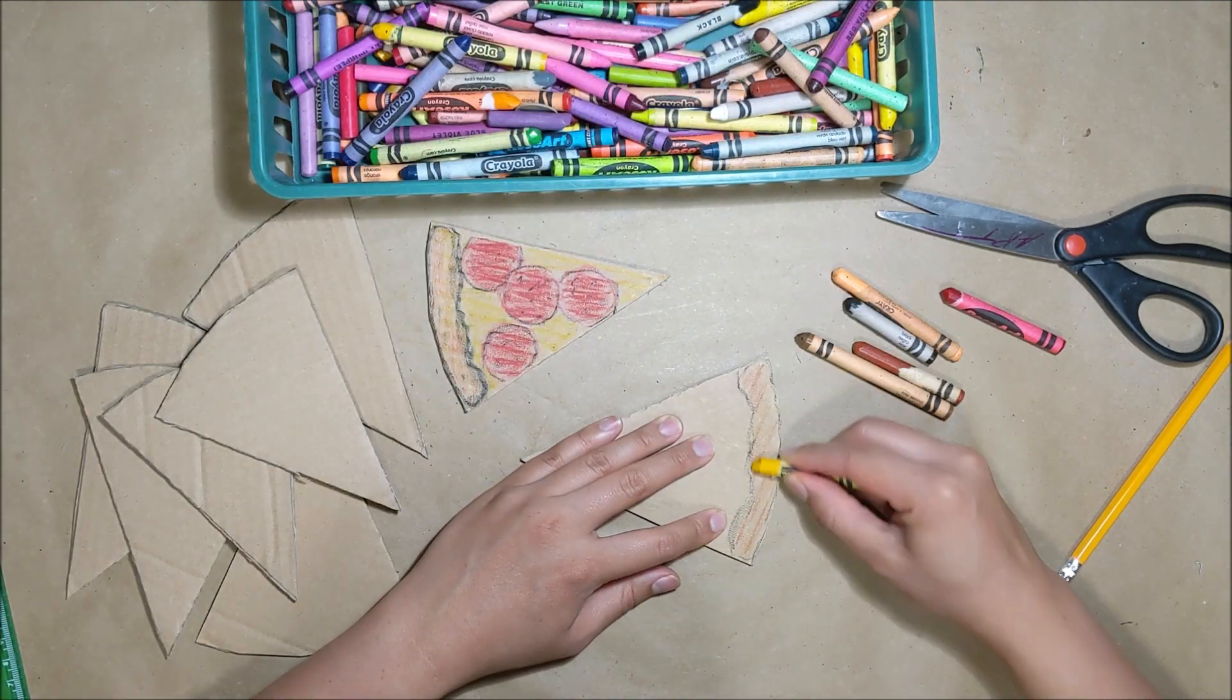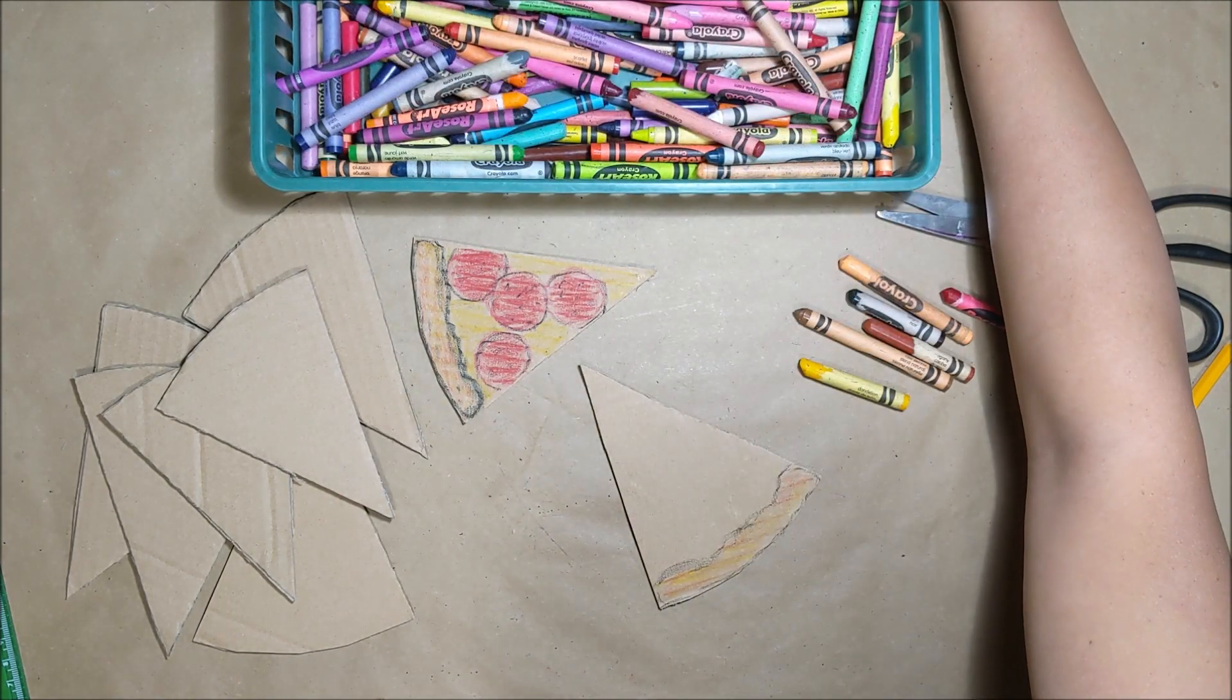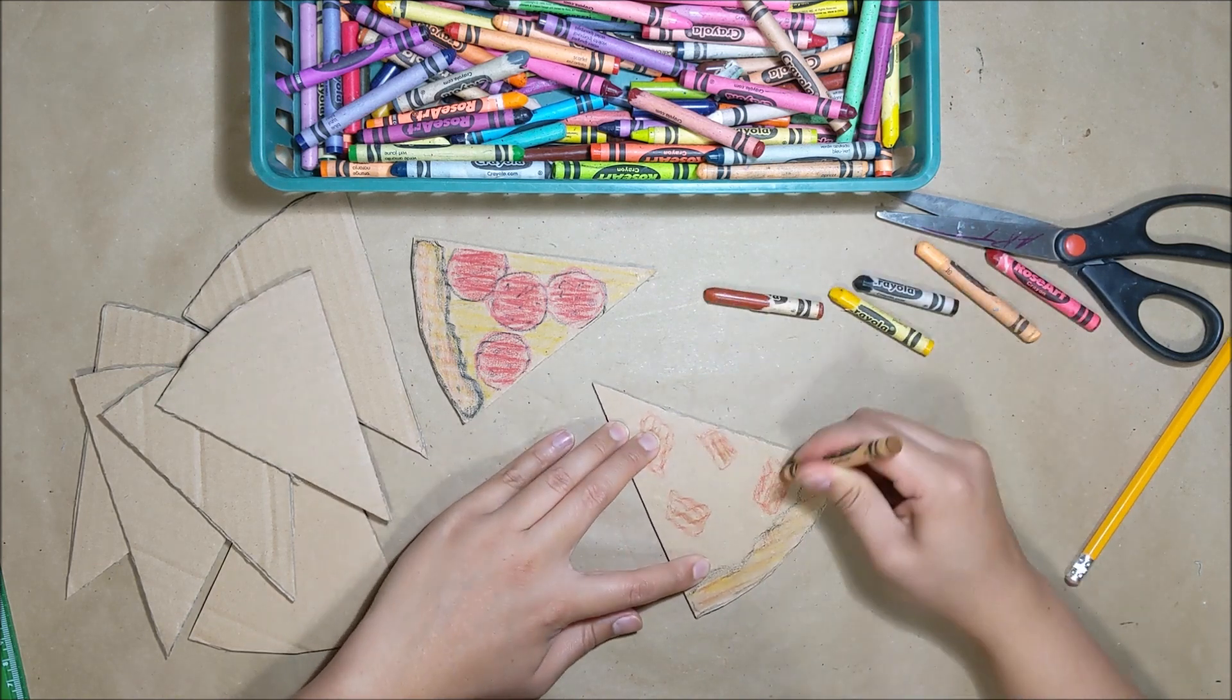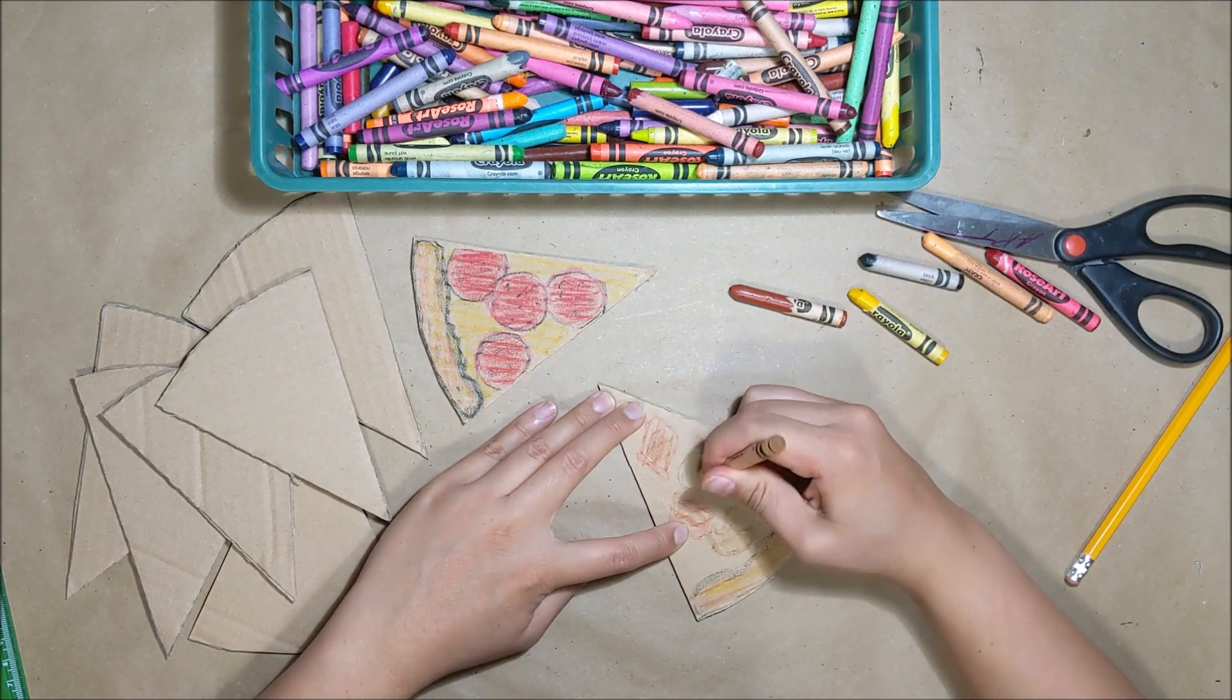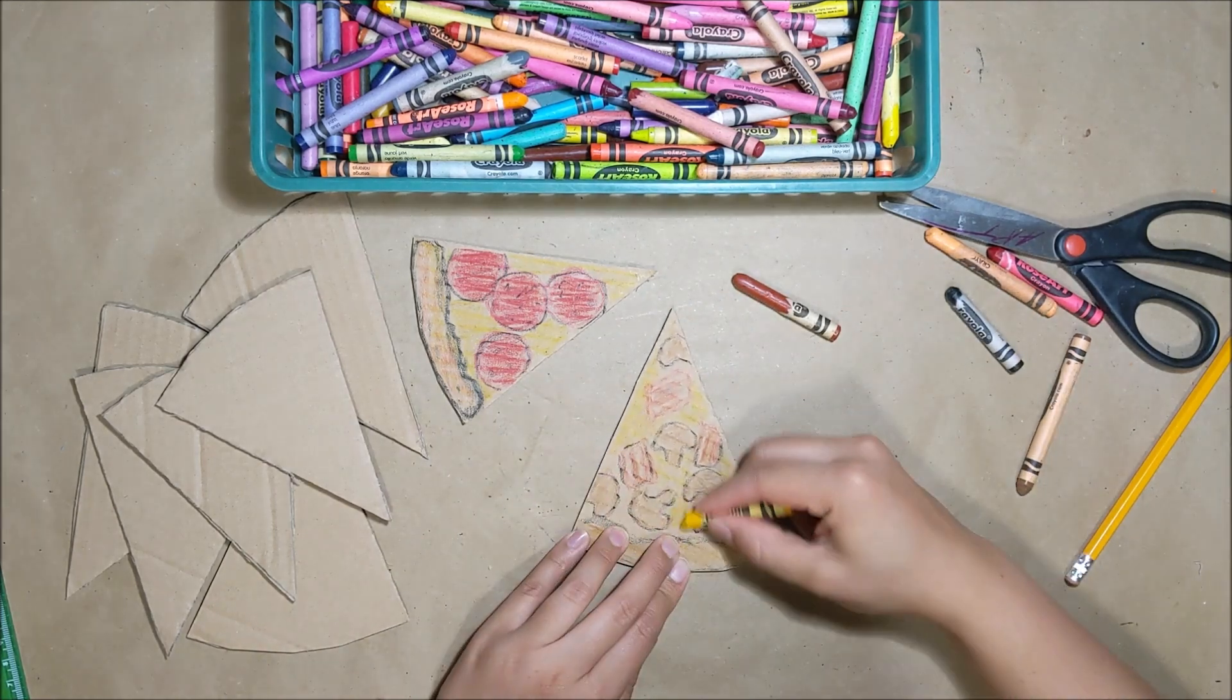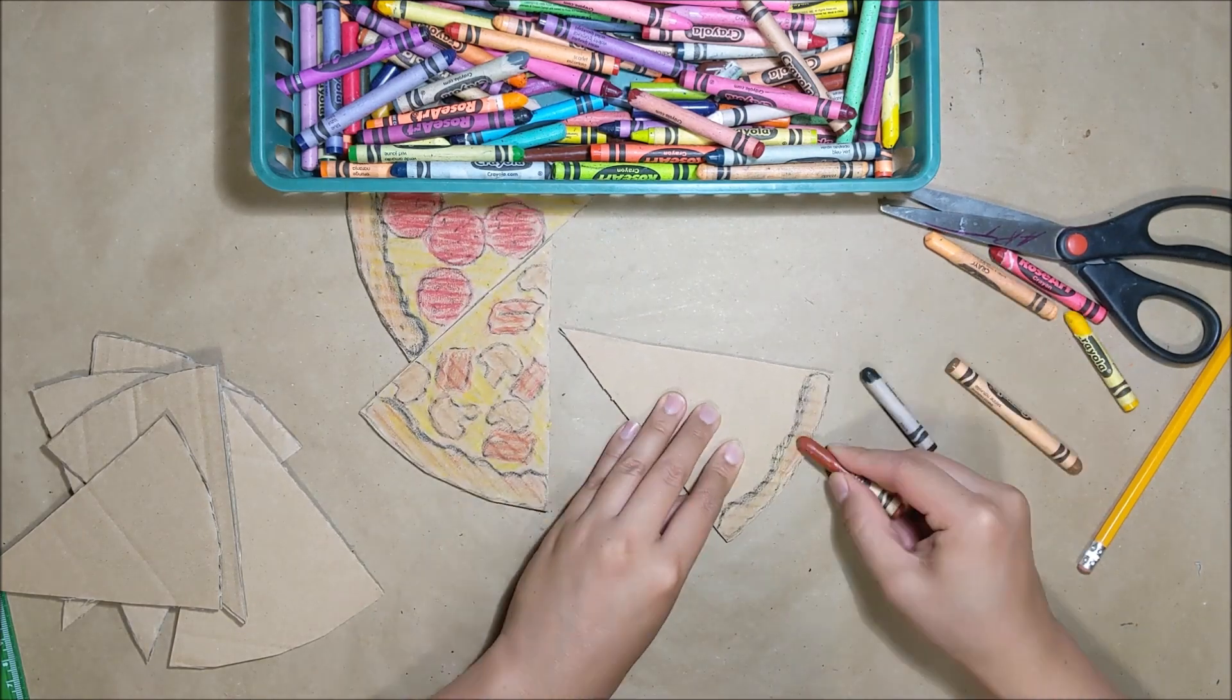And here's my second slice. It's the same process. We create our crust with those colors and then add whatever toppings that you want. This one I'm doing bacon and mushrooms. Make sure to remember to outline your toppings and your crust to give that bold look.